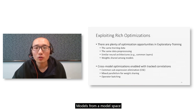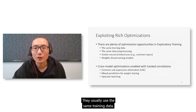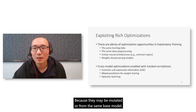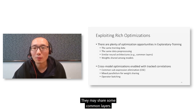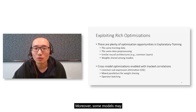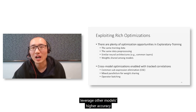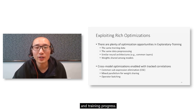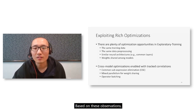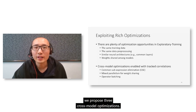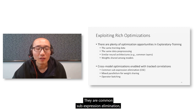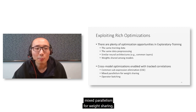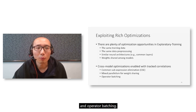Models from a model space are usually similar to each other. They typically use the same training data and the same data preprocessing logic because they may be mutated from the same base model, and they may share some common layers. Moreover, some models may share weights to leverage other models' higher accuracy and training progress. Based on these observations, we propose three cross-model optimizations: common sub-expression elimination, mixed parallelism for weight sharing, and operator batching.